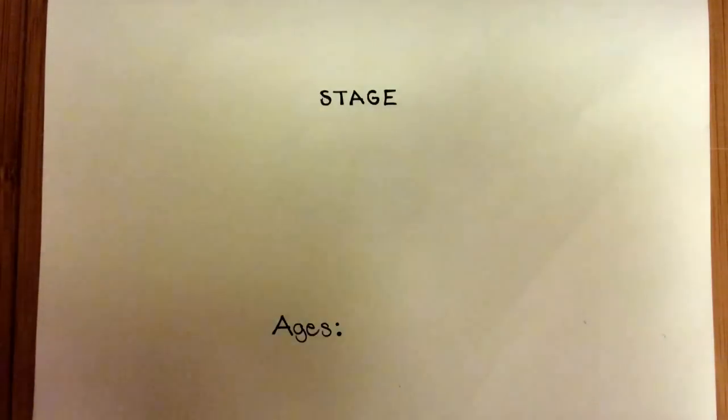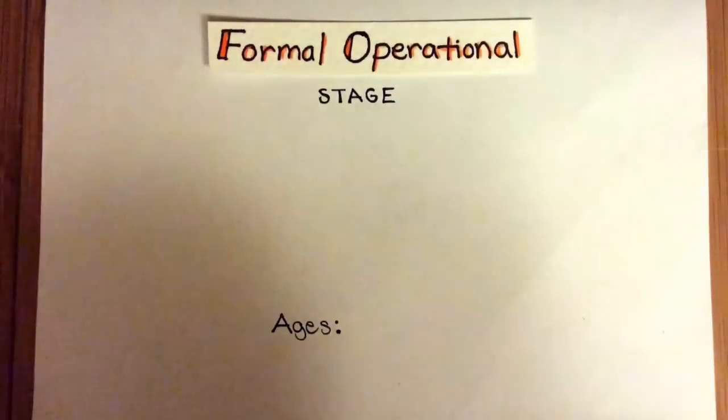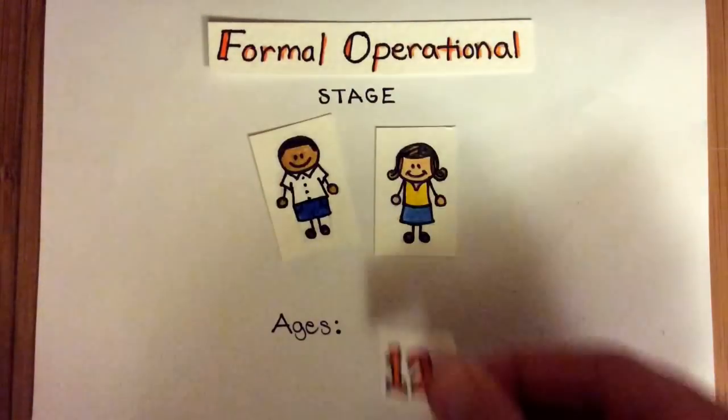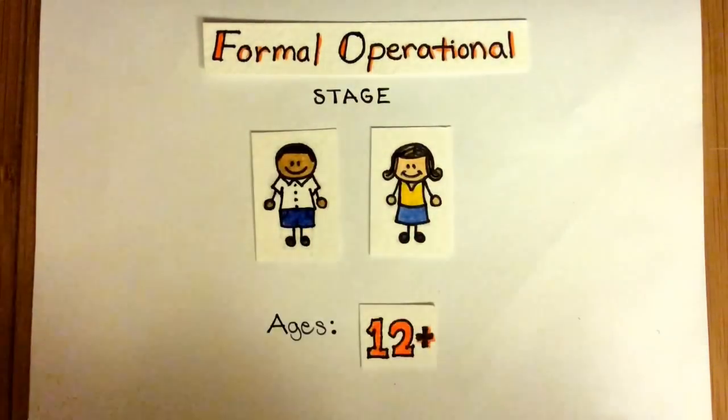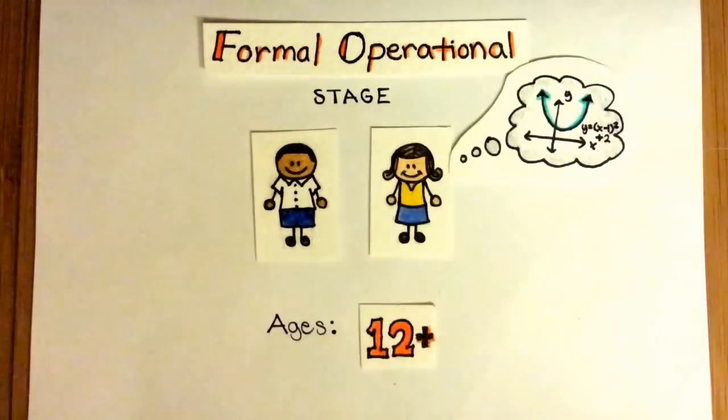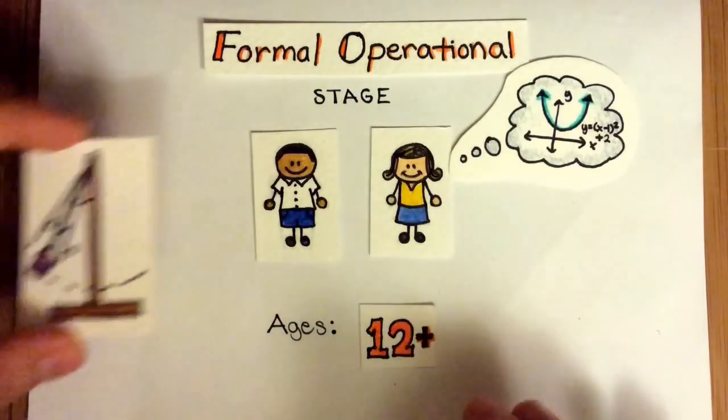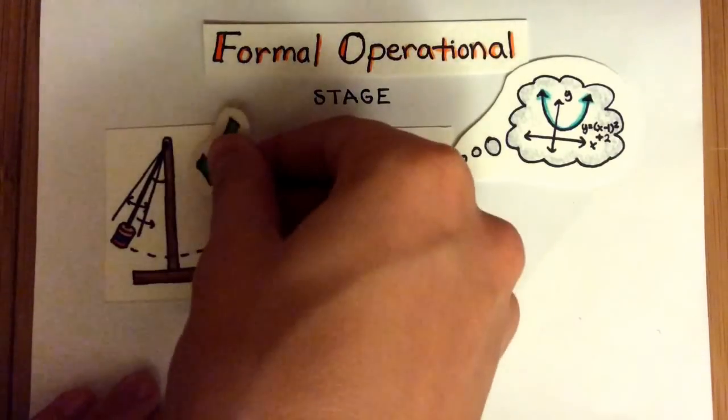The formal operational stage includes individuals ages 12 and older. This is the final stage of Piaget's progression, and it involves the ability to think abstractly and reason hypothetically. Unlike the first three stages, not all people reach this stage. The individuals that do reach this stage are able to perform systematic experiments to draw accurate conclusions about the world.